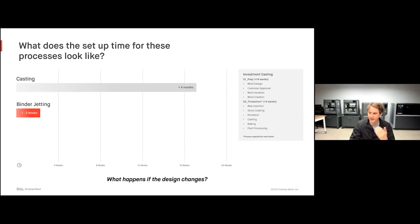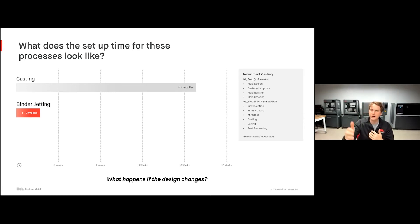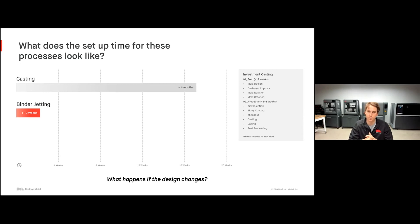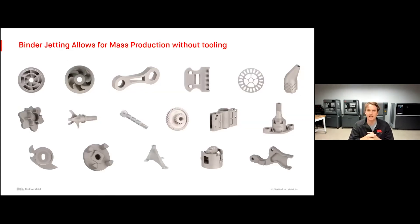Now what happens if the design changes? No longer do you need to make huge changes to your tools. All you need to do is make changes to your file, update your STL, send it to the printer, and in a few days you can have hundreds of parts. This allows for mass customization — being highly agile and never being locked into a design just because you've already invested in tooling.